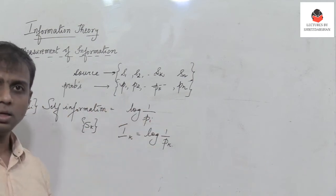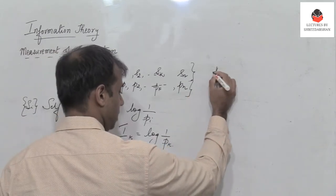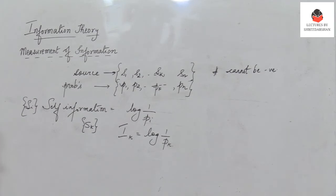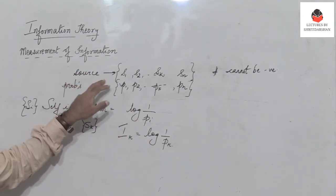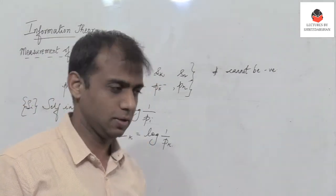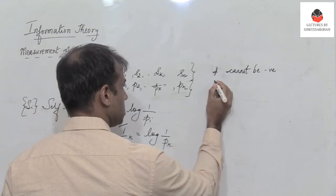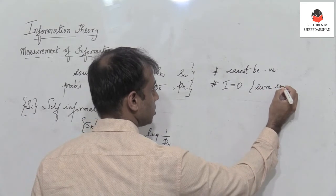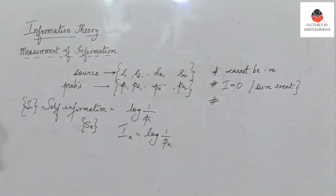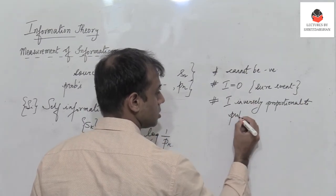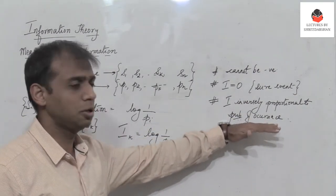From these discussions, we come across four observations. First, the information content or self-information of any message cannot be negative. Second, the information content for a sure event is zero — when the probability of occurrence is one, the self-information is zero. Third, self-information is inversely proportional to the probability of occurrence: the lower the probability, the higher the information content.